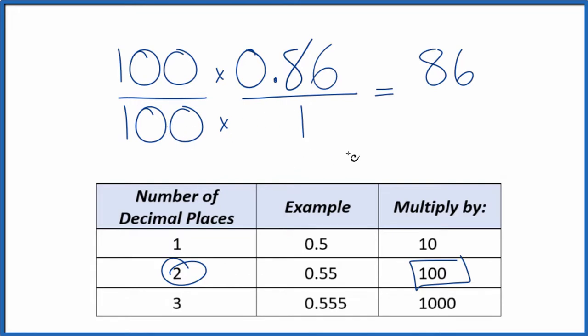So 100 times 1, that equals 100. And now we have our fraction, 86 over 100. We can reduce this further, though.